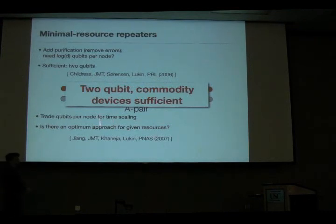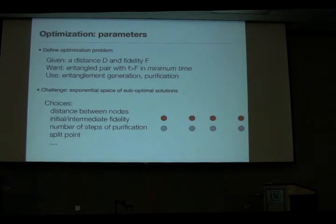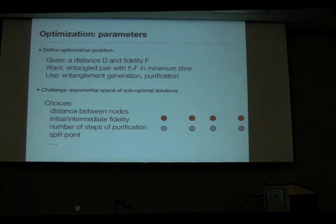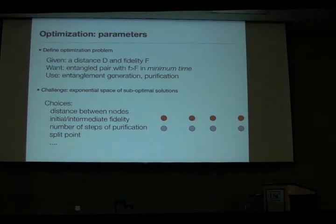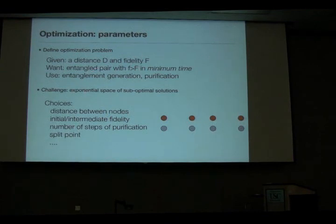Can we optimize this procedure? Yes. We first define the optimization problem. In quantum communication we usually have two things: a distance we want to achieve — say communicating with someone at a bank across the ocean — and a minimum fidelity f. If the fidelity is too low, we can't use the channel for cryptography or teleportation-based gates. So I have a target fidelity and a target distance, and I want to minimize the time for pair generation to maximize the bandwidth of entangled pairs.